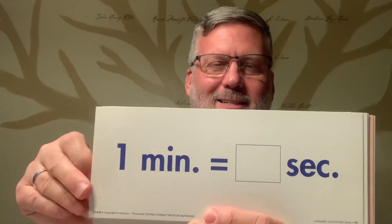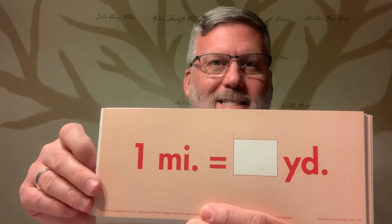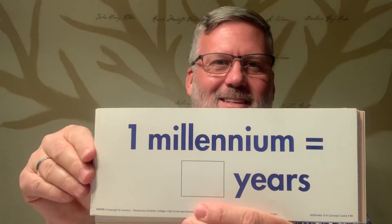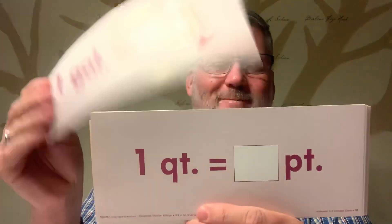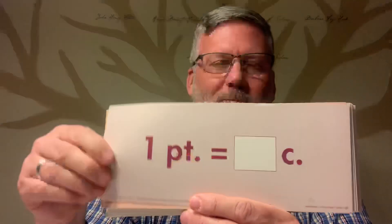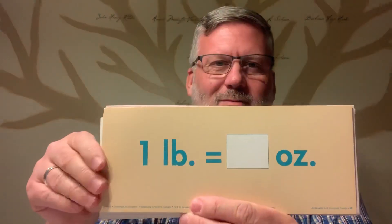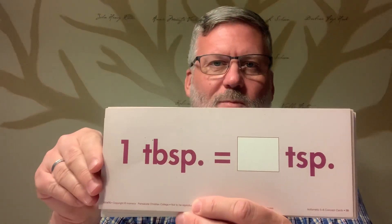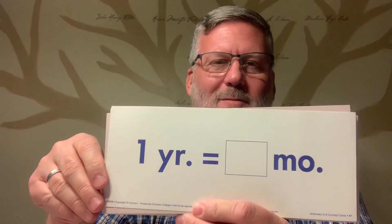Three hundred sixty-five. Sixty. One thousand seven hundred sixty. Sixty. One thousand. One thousand. Twenty-four. Ten. Two. Ten. Four. Thirty-six. Two. Four. Sixteen. And back to twelve.